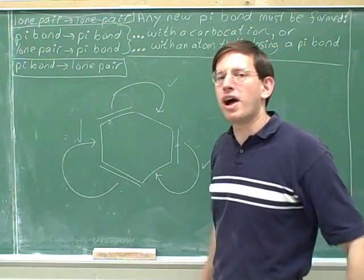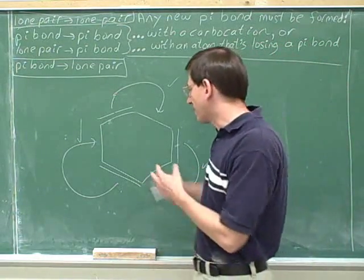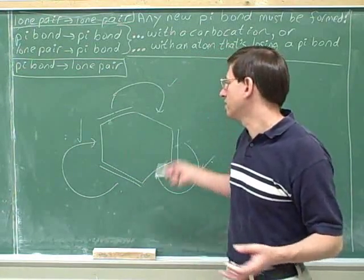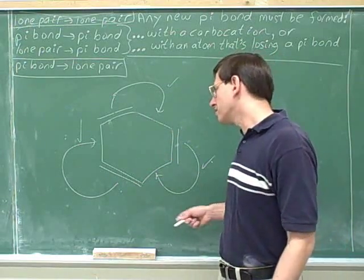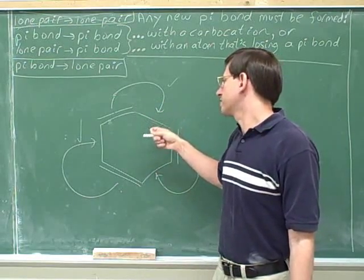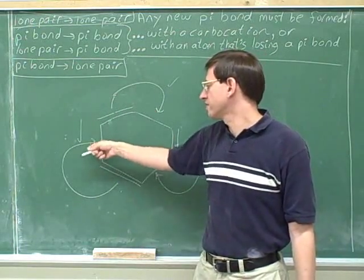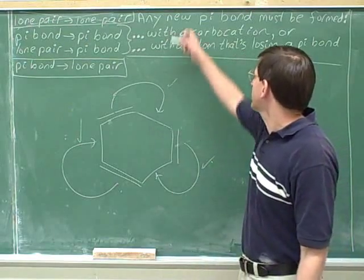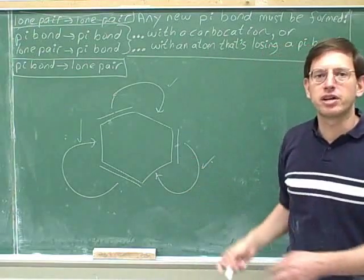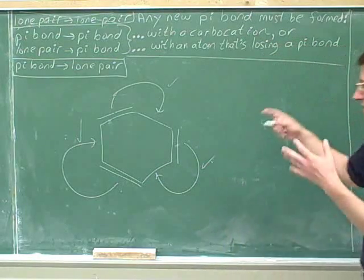This is a pattern we saw earlier — a whole cycle of arrows. We can see why a cycle of arrows is a good pattern: if you have a cycle of arrows, it's perfectly fine to make new pi bonds because each new pi bond makes room for another pi bond coming in behind it. Every single new pi bond is being formed with an atom that's also losing a pi bond, so every atom here is both gaining and losing a pi bond. None of them have to worry about exceeding an octet. So this is legal.